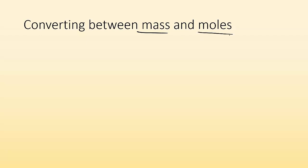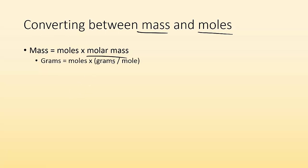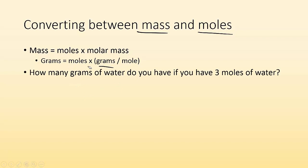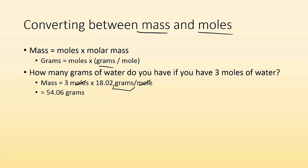So converting between mass and moles — let's start with that. If I'm given the mass and I want moles, mass equals moles times molar mass. Because molar mass is grams per mole, if I want grams, I take the moles and multiply by the molar mass, and the moles cancel out. For example: how many grams of water do you have if you have three moles of water? Mass equals 3 moles times 18.02 g/mol — moles cancel, and I get 54.06 grams.